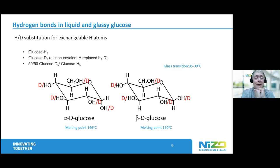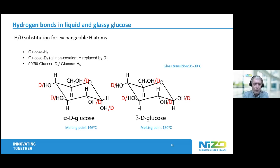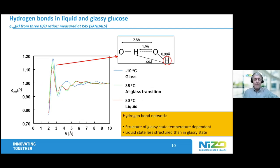We took fully hydrogenated glucose and glucose of which the exchangeable H atoms were exchanged for D, and a 50/50 mixture of those. Now you have a set of data — essentially a set of equations — from which you can calculate the radial distribution functions: H with H, H with O, and X with X where X is anything like O or C. We did that at three temperatures: 80°C where the glucose was completely liquid, just at the glass transition, and also at a much lower temperature deep under the glass transition.